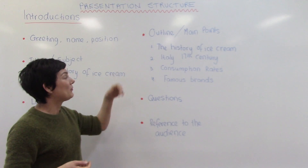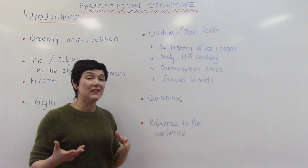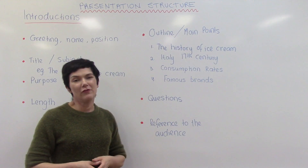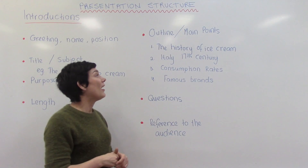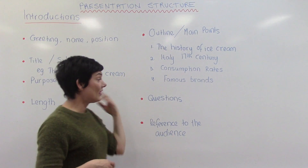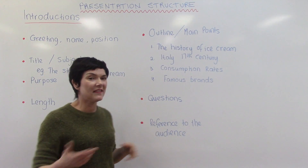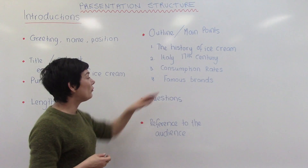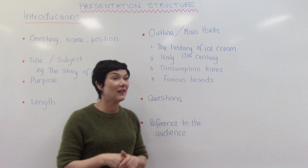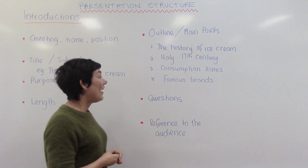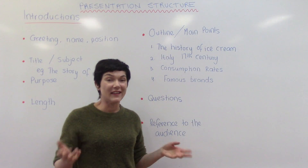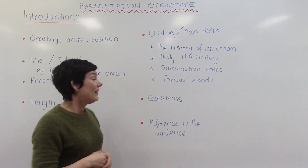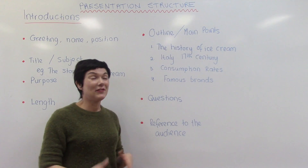The most important part of an introduction is your outline or your main points — this is where you tell the audience the subtopics you'll be discussing. For a ten-minute presentation, four subtopics are probably enough. You might say: 'First of all we'll have a look at the history of ice cream; after that we'll focus on Italy during the 17th century; then we'll look at consumption rates and which countries eat the most ice cream; and finally we'll have a look at a few famous brands.'